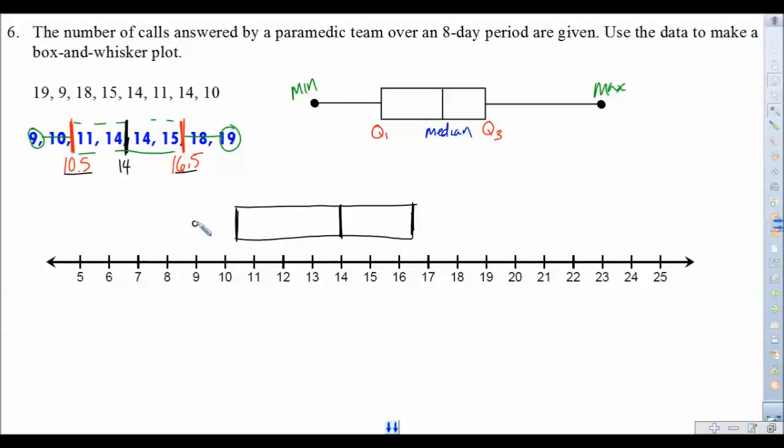Let's make the whiskers. Let's make the whiskers. There, and then over here, 19. Boom. Nice looking box and whisker. An even better looking box and whisker.